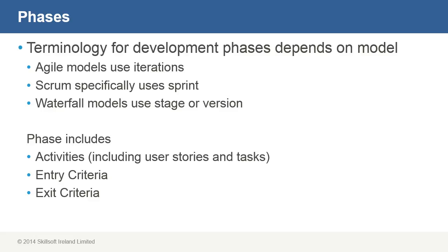The terminology you'll use for different development phases really depends on the model. The Agile model works in terms of iterations. Agile methods usually subdivide individual tasks into simple increments. These increments require little planning and are usually broken into small, manageable timeframes that could be as small as a couple of hours or they could extend out to a week or more.